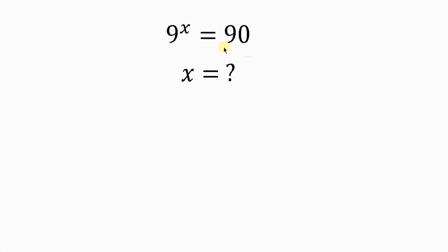Our first step would be to take the log of both sides. The reason is because we have the variable x as the exponent. So let's take the log of both sides. I'll take the log of the left-hand side, which is 9 to the x, and this is equal to the log of the right-hand side, which is log 90.